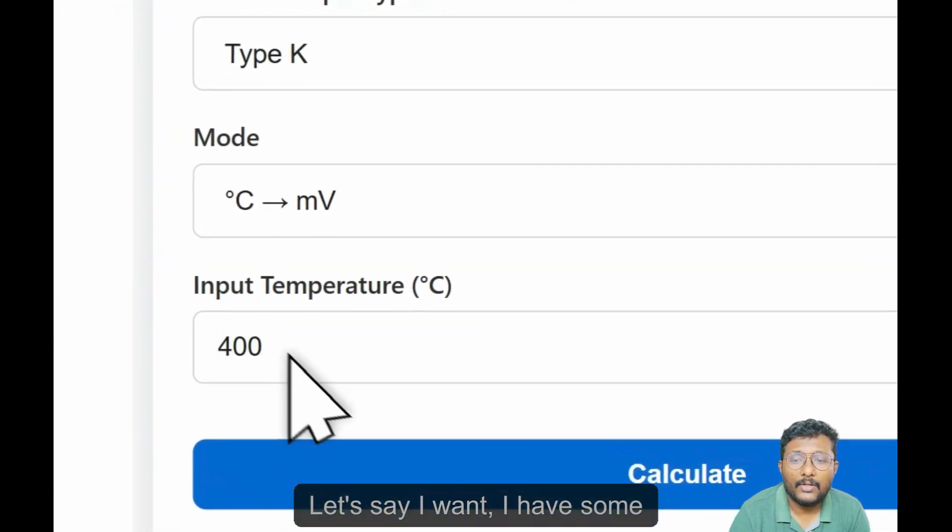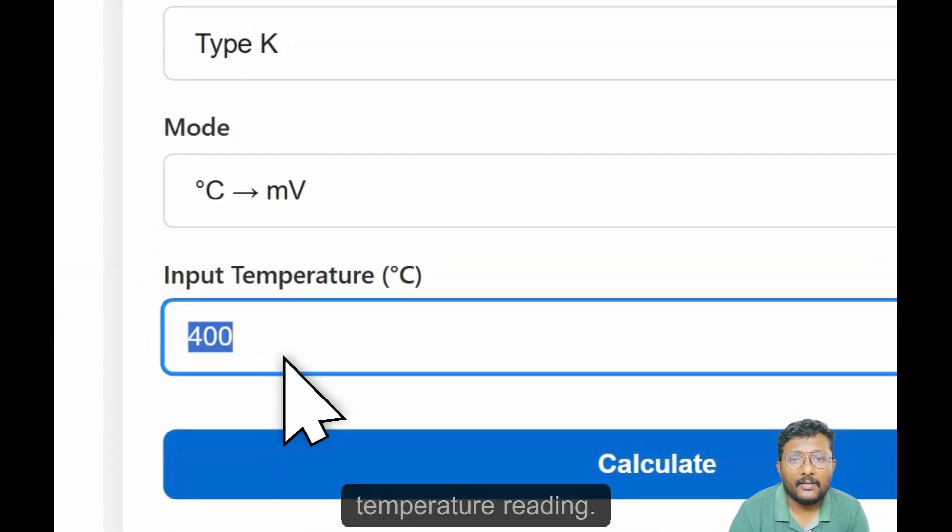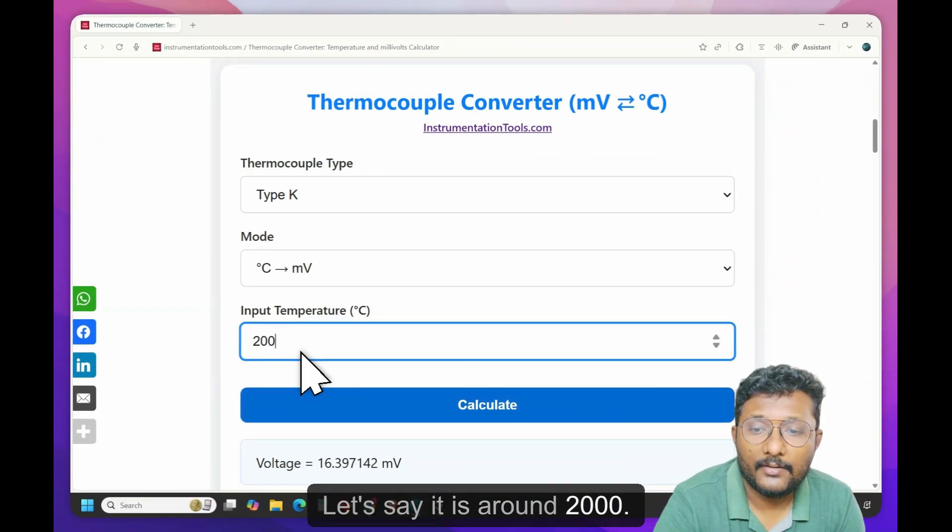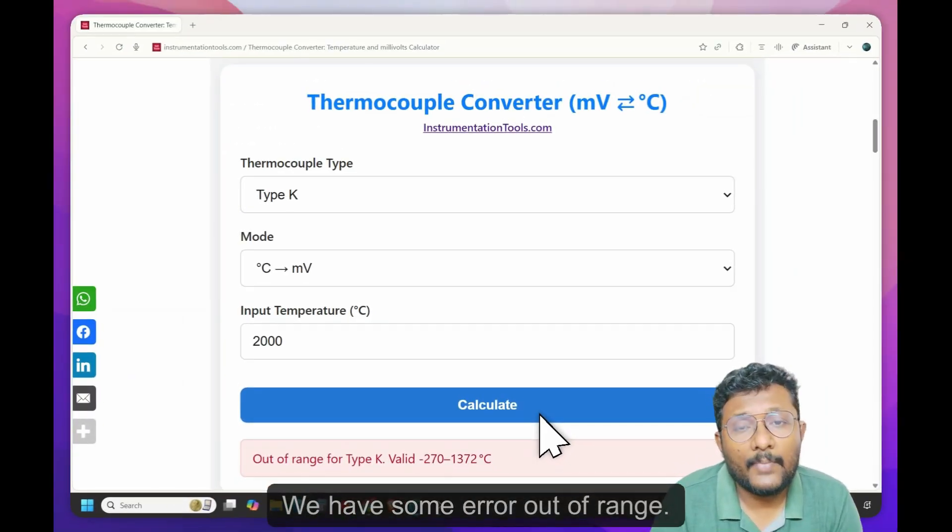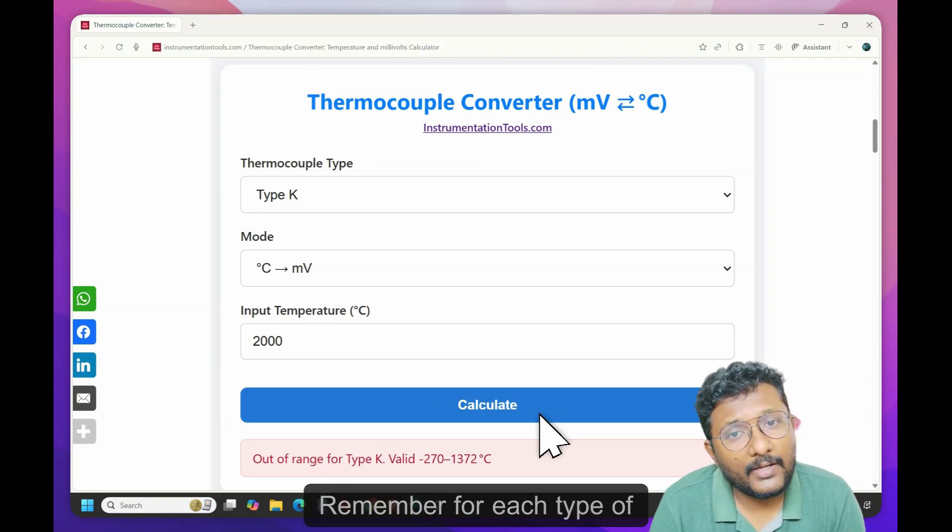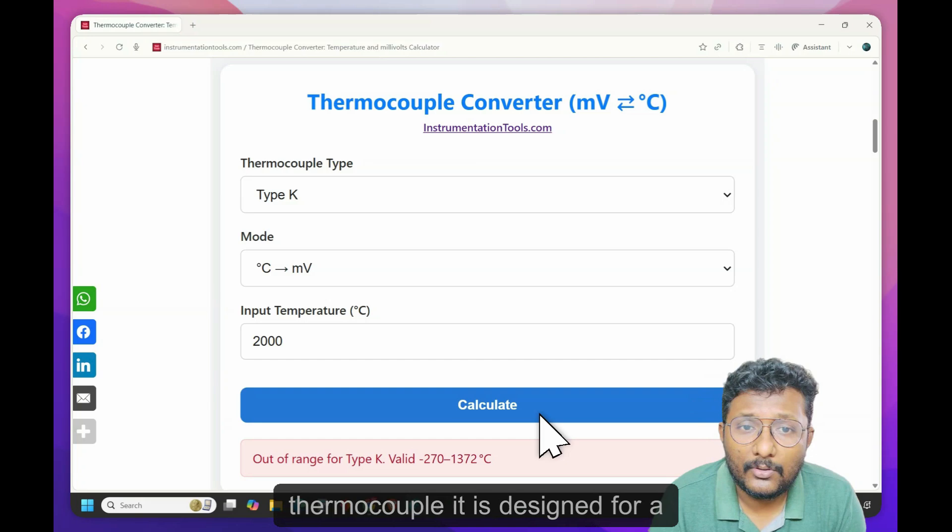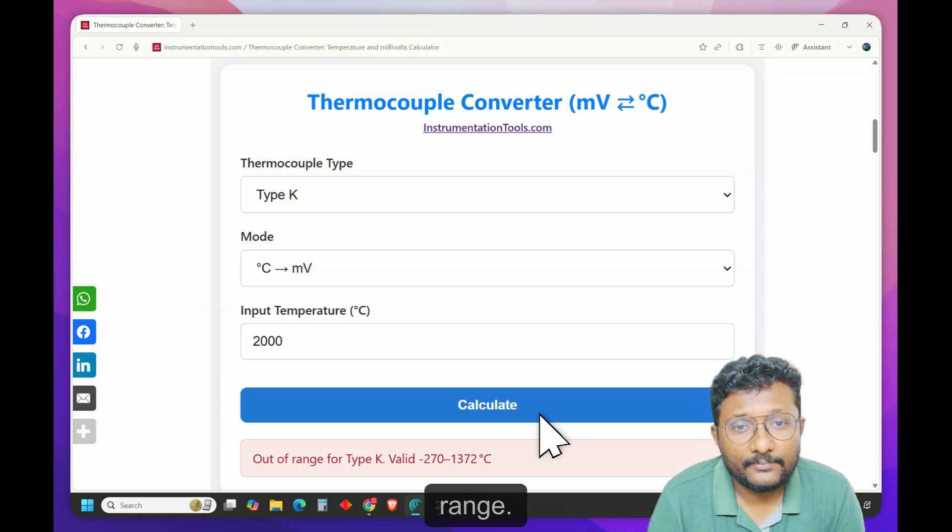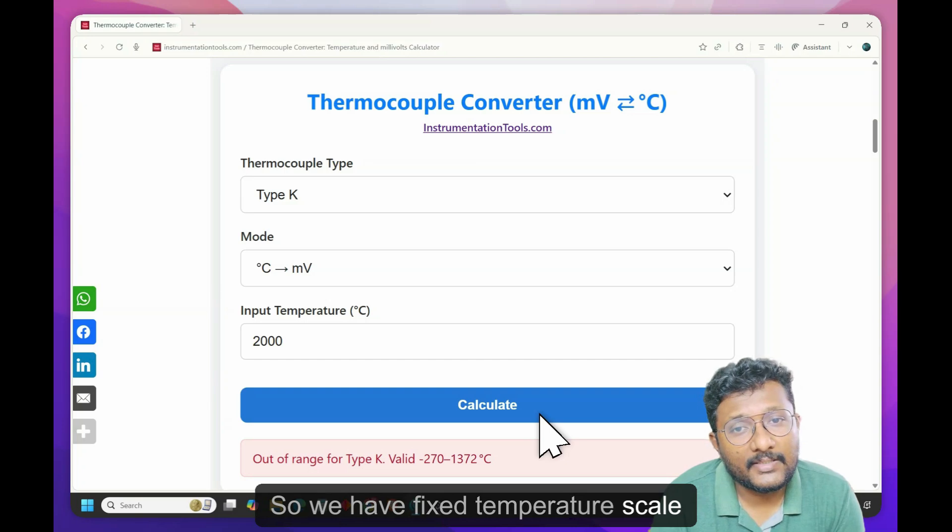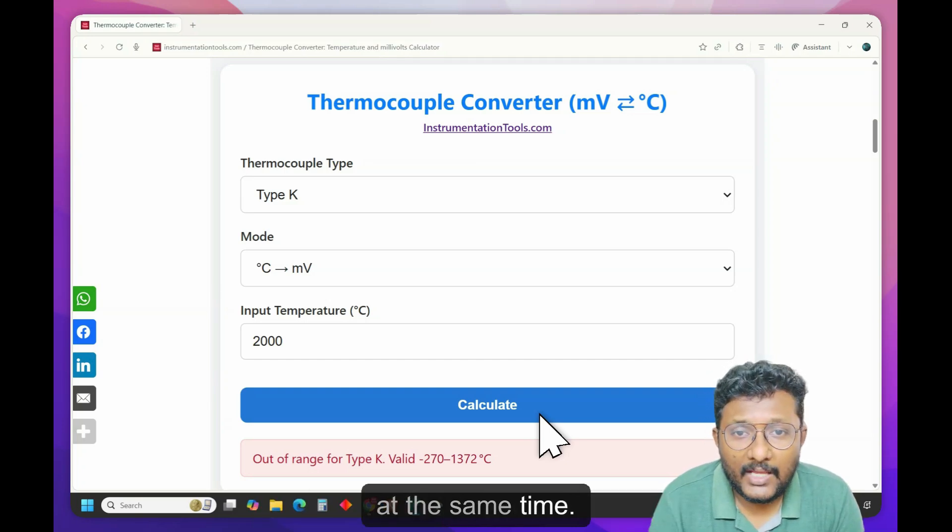Let's say I want, I have some temperature reading. Let's say it is around 2000. Calculate. We have some error out of range. Remember for each type of thermocouple, it is designed for a certain temperature measurement range.